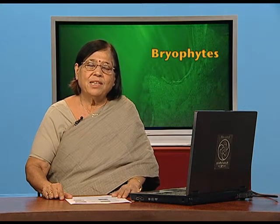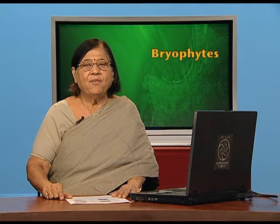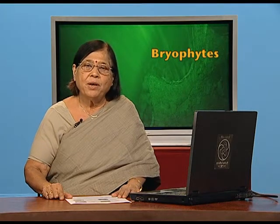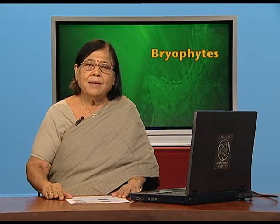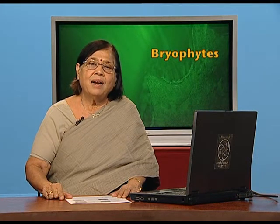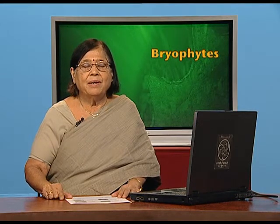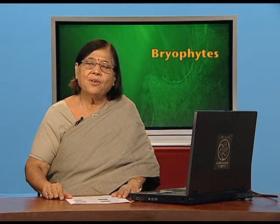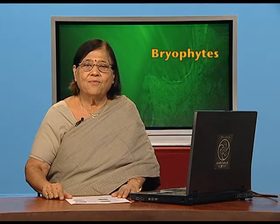The gametes are delivered in water. The antherozoid reaches the egg and fertilizes it, producing a zygote which has a diploid number of chromosomes. Because the gametophyte was haploid, it produced haploid gametes; two haploid gametes fused to produce a diploid zygote. This zygote undergoes mitotic division — not reduction division — to produce the sporophyte. The sporophyte lives on the gametophyte because the gametophyte is photosynthetic, and the sporophyte gets its food through the gametophyte.